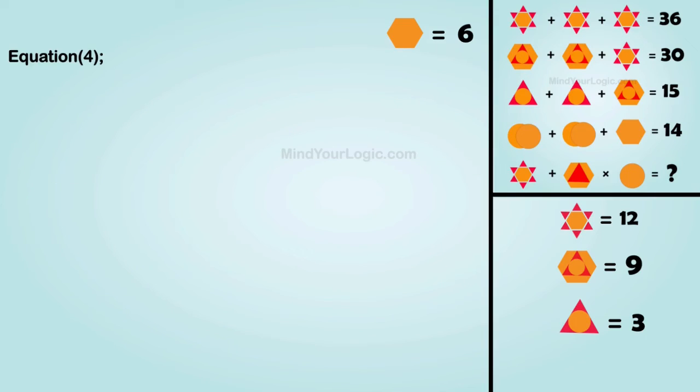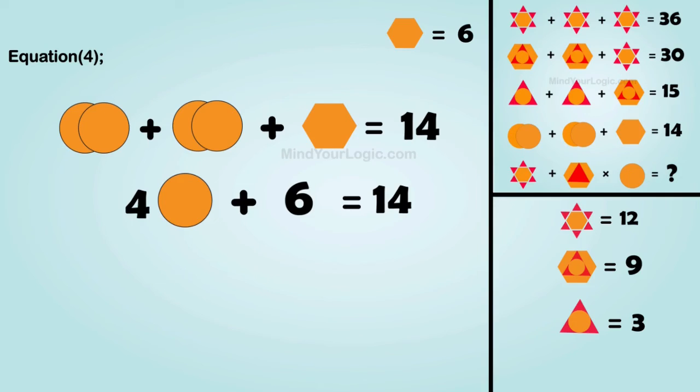Substitute the value of only hexagon in equation 4. By simplifying, we get the value of circle as 2.